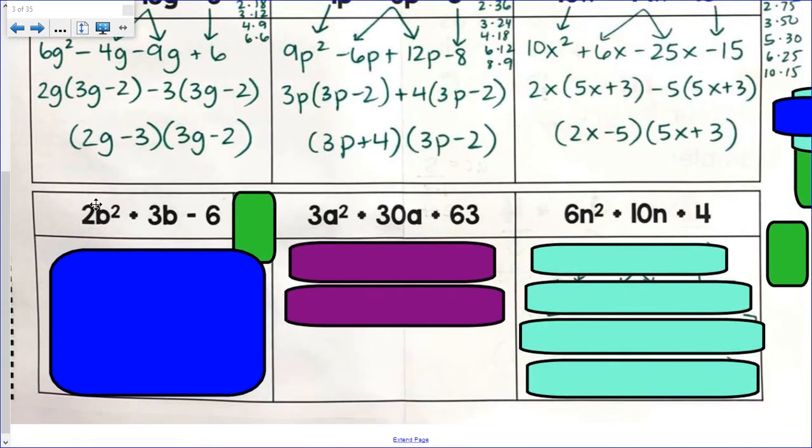Last three problems. 2 times negative 6 is negative 12. Ways to get negative 12. 1 times 12. 2 times 6. 3 times 4. I need them to add up to get a positive 3. 1 and 12. Nope. 2 and 6. No. Close. 3 and 4. No.